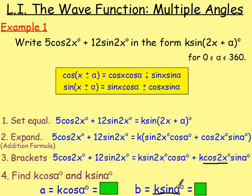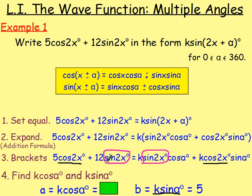So we know k·sinα equals the same coefficient of cos2x on the left-hand side. The coefficient of cos2x is 5, so the coefficients must be equal, meaning k·sinα equals 5. After that, the coefficient of sin2x on the right is k·cosα, so k·cosα must equal the coefficient on the left, which is 12. So k·cosα equals 12. We have now found those values.